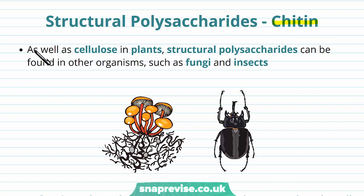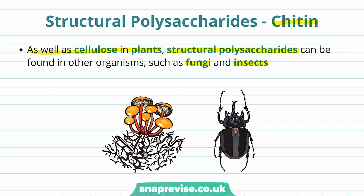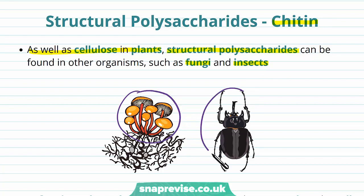As well as cellulose being found in the plant cell wall, some structural polysaccharides can be found in other organisms like fungi and insects. We'll be talking about chitin in terms of being found in fungi and lots of insects like beetles.